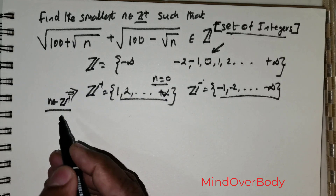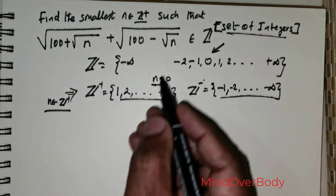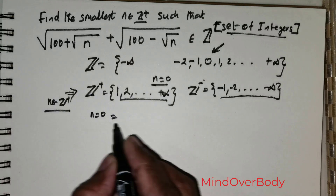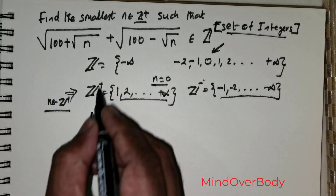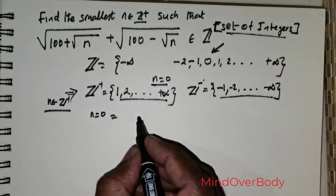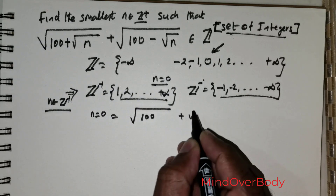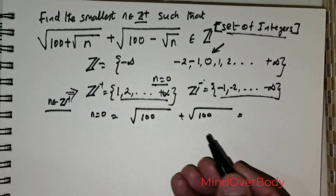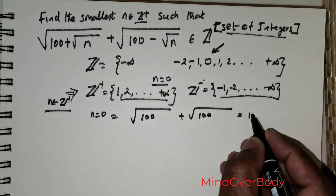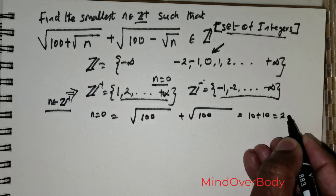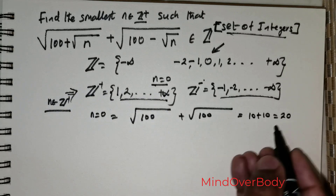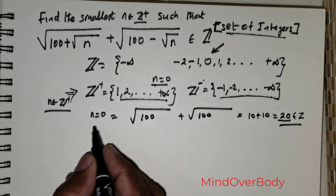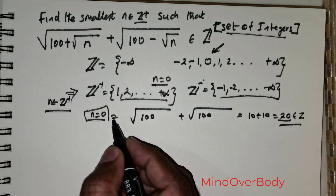This is the requirement for this question. Now, if we take n equal to 0 and substitute it, we get the square root of 100 plus the square root of 100, which simplifies to 10 plus 10, giving us 20. So the solution gives 20, which is an element of the integers. But the problem is we cannot take n equal to 0, since 0 is not a positive integer. That is a major issue here.